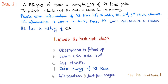Here is a case: A 68-year-old male comes in complaining of right knee pain. The patient admits that the pain is worse in the morning. Physical exam shows inflammation of the right knee, left shoulder, right second and third metacarpophalangeal joints, as well as the elbows. The inflammation is worst in the right knee — warm, red, swollen, tender. He has a history of osteoarthritis. What's the best next step?